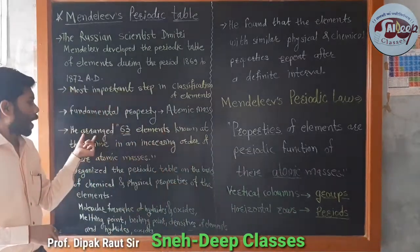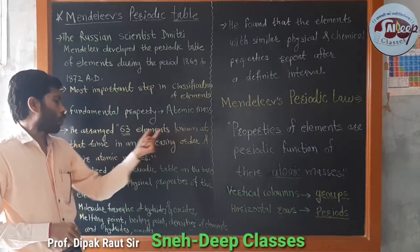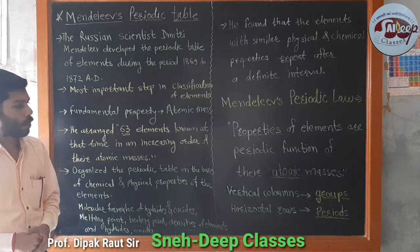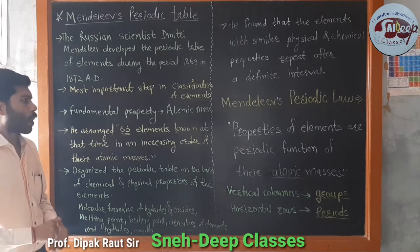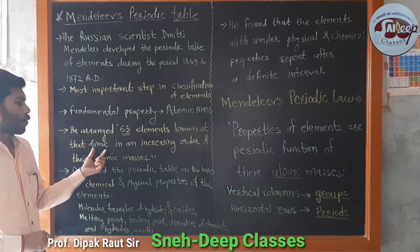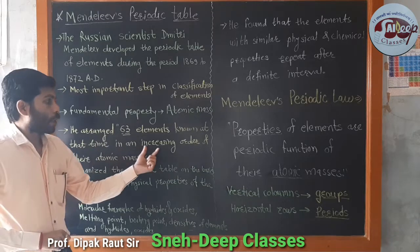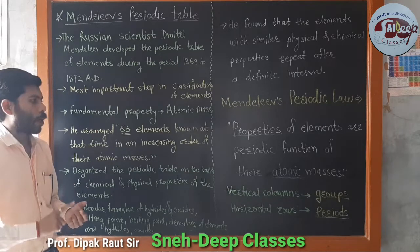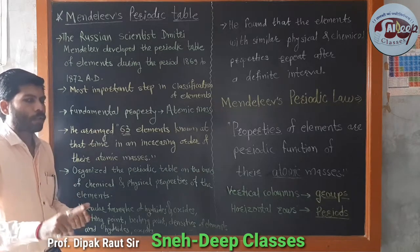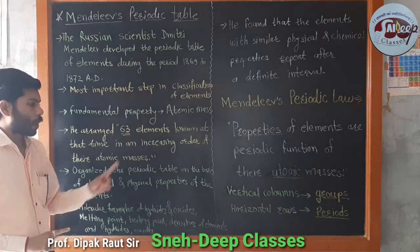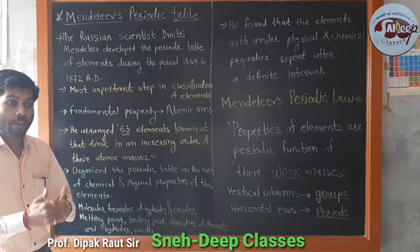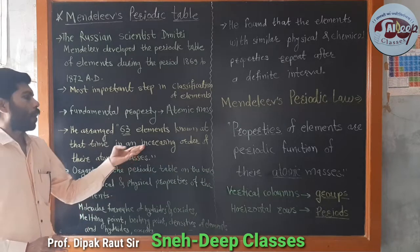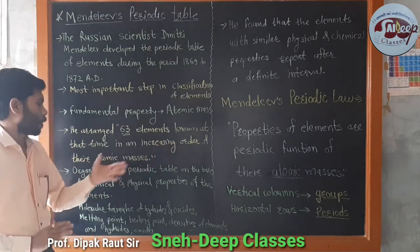He had 63 elements known at that time, arranged in increasing order of their atomic masses. These 63 elements Mendeleev arranged in increasing order of their atomic masses — the same concept we see in Dobereiner's triads and Newlands' octaves.